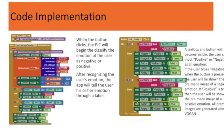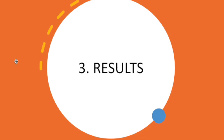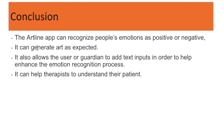Here's the code implementation for references and results. For the conclusion, the Artline app can recognize people's emotions as positive or negative and can generate art, which was the expectation. It allows the user to add text inputs to help enhance the emotion recognition process, and it can help therapists understand their patients and formulate a mental health treatment.